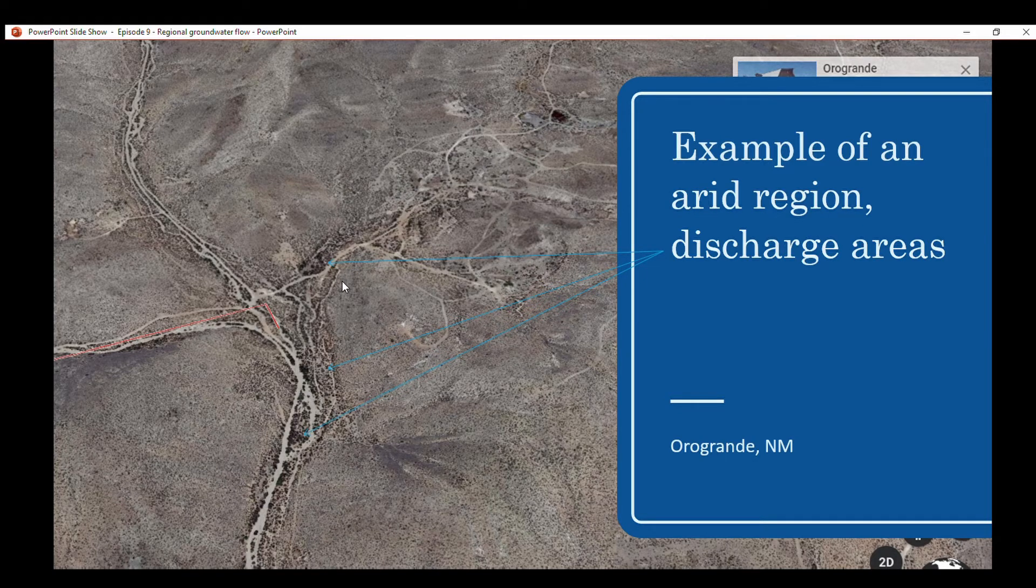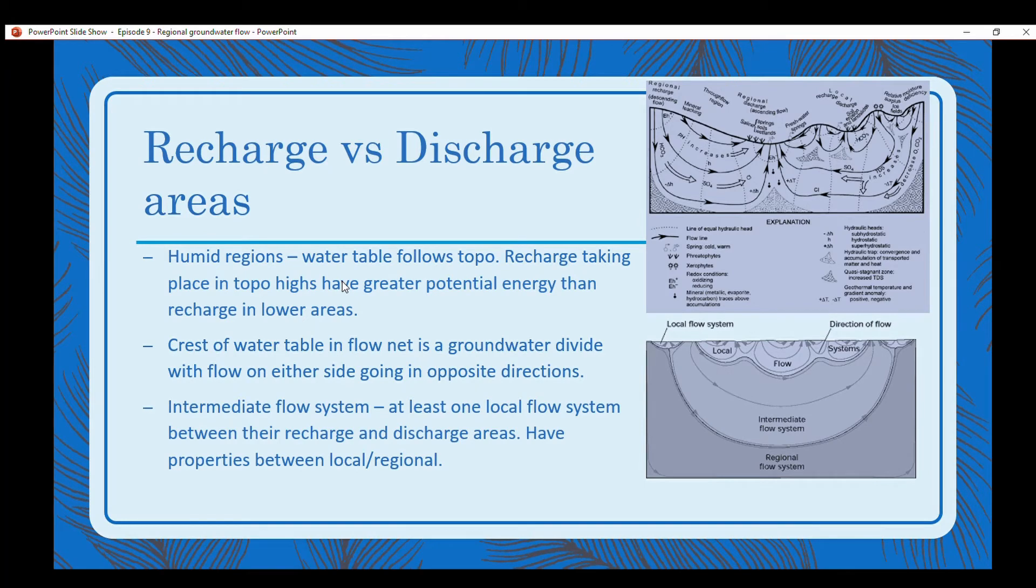In humid regions, the water table follows the topography for the most part. Recharge takes place in topographic highs and has greater potential energy than recharge in the lower areas. The crest of the water table in a flow net is a groundwater divide with flow on either side going in opposite directions.